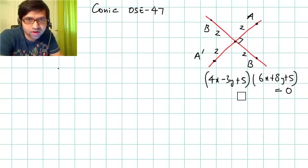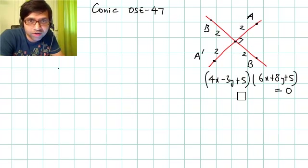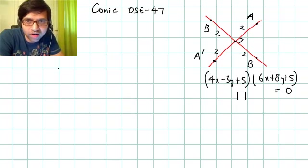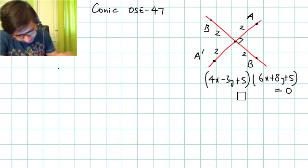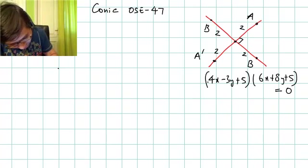The method I'm using is not the one given in the module — I'll use the parametric form of a line. It makes sense to use parametric form here because distance along a line is involved. Whenever distance along a line is involved, it is advisable to use the parametric form of the equation of a line.